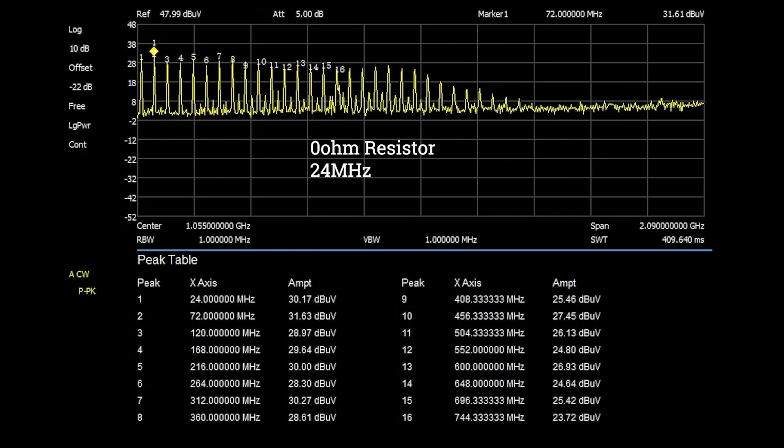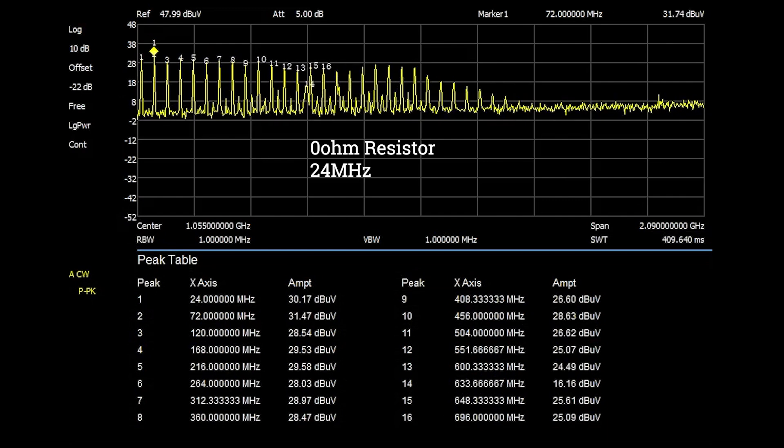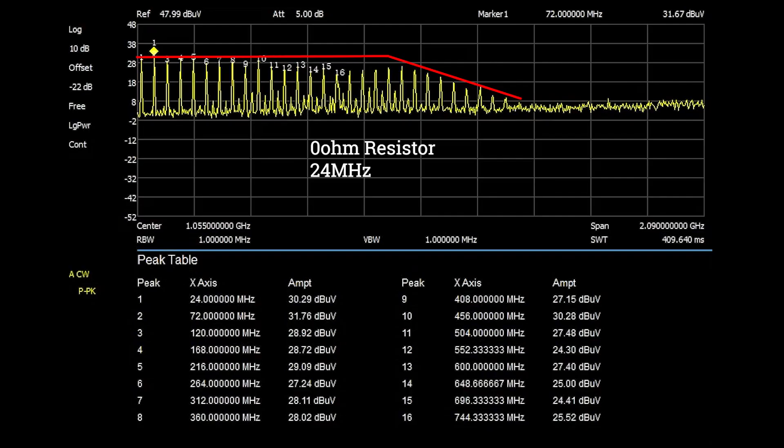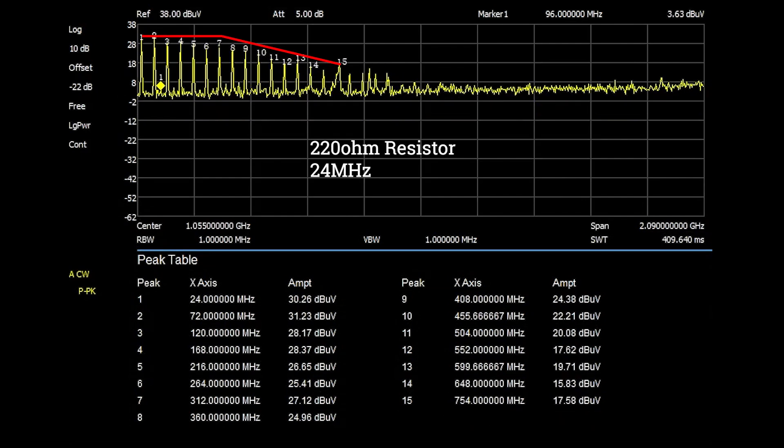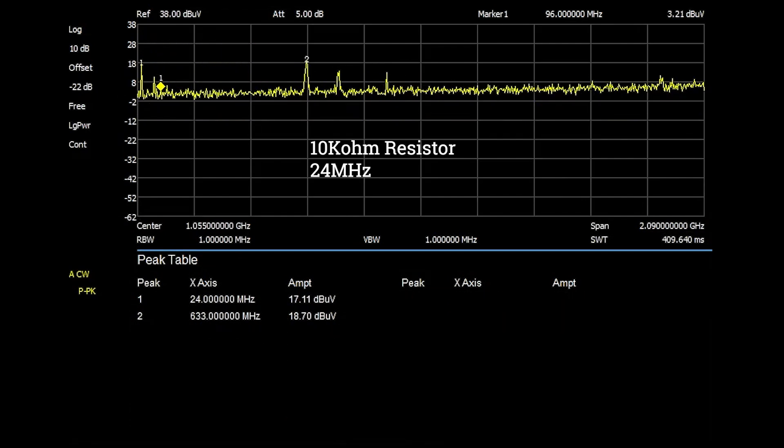Doing the same test at 24 megahertz shows the exact same behavior. The peaks are much closer together and while that makes it look a lot scarier it's just because the harmonics at 24 megahertz are much closer spaced than at 96 megahertz. The zero ohm resistor shows very little roll off, the 220 ohm shows a linear roll off, and the 10 kilo ohm shows basically no power whatsoever.